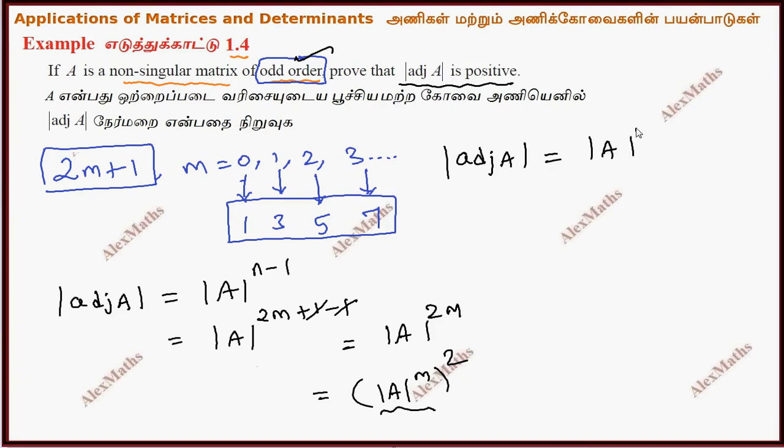The determinant of A to the power m, whole squared. This term is positive because it's a whole square. If this is positive, therefore the adjoint of A has a positive determinant.